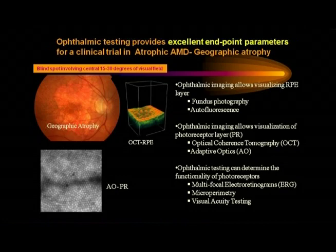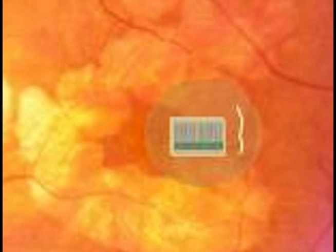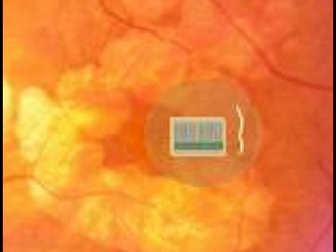As David has pointed out, what we're doing here is putting these stem cells that drive retinal pigment epithelium in an area right next to where there are photoreceptors, to rescue them so they're not lost and somebody's not left legally blind. And we've talked about why it's so difficult to replace neural retina.